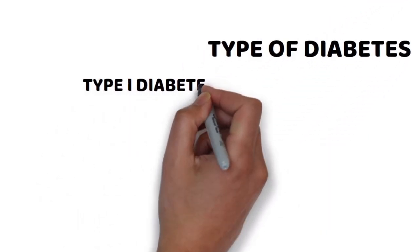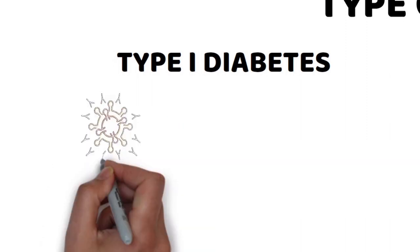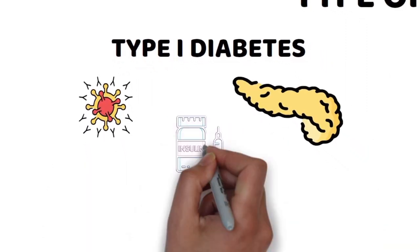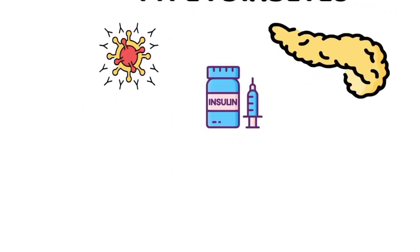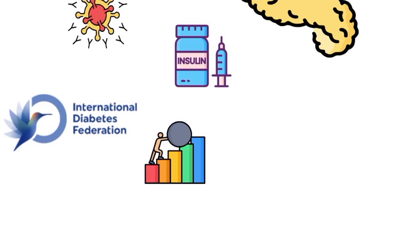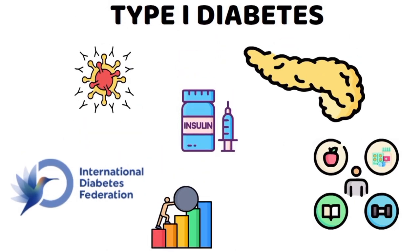Type 1 diabetes involves autoimmune destruction of insulin-producing cells. Patients require daily insulin injections. Organizations like the International Diabetes Federation are working tirelessly to improve lives and prevent diabetes.